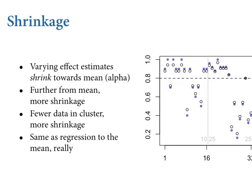Summary of shrinkage: varying effects estimates shrink towards the mean — in this case alpha. The further from the mean, you get more shrinkage, because the model thinks it's more plausible that those extreme values are due to sampling variation and the finite amount of data per cluster rather than some genuine feature of that tank. If there's less data in a particular cluster, you get more shrinkage because it's more plausible that sampling variation explains its position, so you need more information from the population.